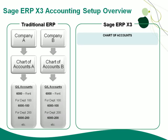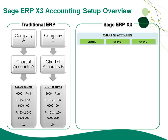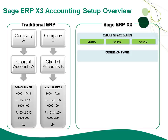The setup of Sage GRP X3 works a little bit differently. The first thing we define are the names for the charts of accounts — just the names — which define the format for the account numbers we'll be using. After that, we define dimension types, which are our analytical pieces of information that we want to track, very similar to cost centers, but X3 gives greater flexibility in recording and reporting on these dimensions. The dimensions are stored in separate tables from your financial transactions.